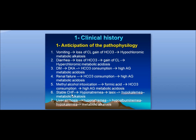In stable congestive heart failure, the patient may have hyponatremia and may be on diuretics like furosemide, developing hypokalemic metabolic alkalosis. In liver cirrhosis, the patient will have hyponatremia, hypoalbuminemia, and hypokalemia, and will develop metabolic alkalosis.